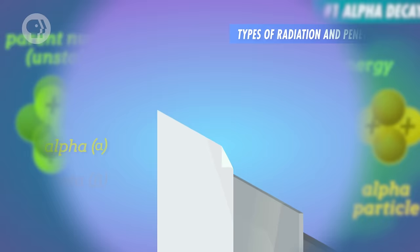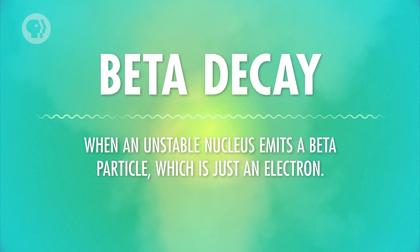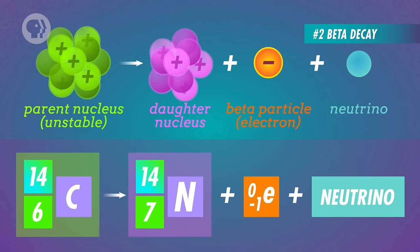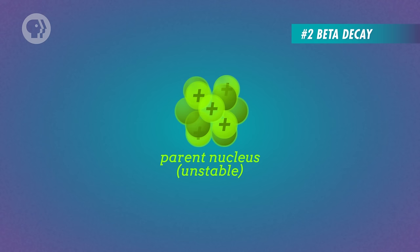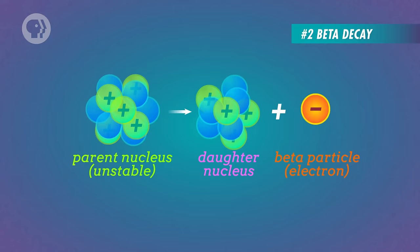But alpha particles have the least penetrating power of the three groups — they're barely able to pass through a piece of paper. The second type of decay that can occur is beta decay, when an unstable nucleus emits a beta particle, which is just an electron. You'll see that whenever an electron is produced, so is a neutrino. A neutrino is a particle with a very small mass that is electrically neutral. Its existence is inferred from the conservation of energy. For example, when a nucleus at rest decays into two fragments, it should give each fragment the same amount of momentum. If the nucleus decayed into the daughter nucleus and an electron, the electron would always have the same momentum and the same energy. But electrons from beta decay have been found to have energies that vary greatly, suggesting that a third particle must be carrying away the rest of the energy.